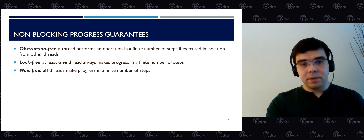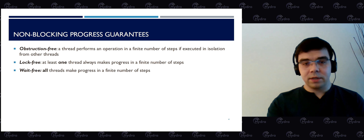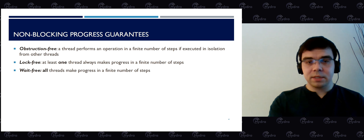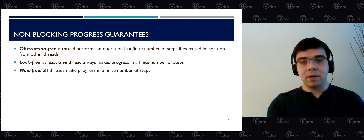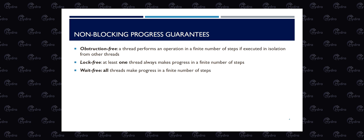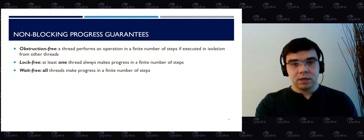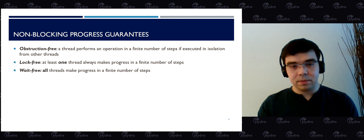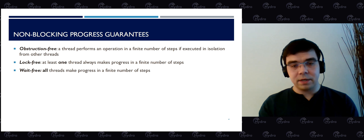One particular type of concurrent data structures is known as non-blocking data structures, with several subtypes providing different progress guarantees. Obstruction-free data structures allow a thread to complete an operation in a finite number of steps as long as other threads don't interfere. Lock-free guarantees that at least one thread always makes progress in a finite number of steps. Finally, wait-free stipulates that all threads will make progress in a finite number of steps.